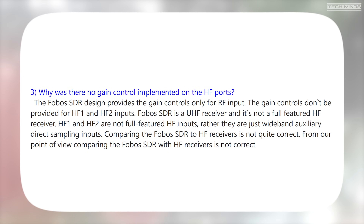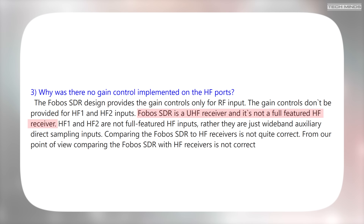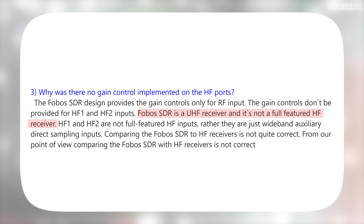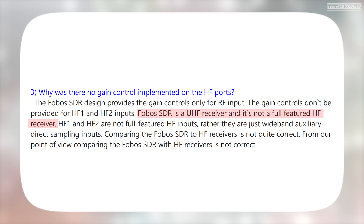Question three was why was there no gain control implemented on the HF ports, since having gain controls on the hardware could improve any of those mirror signals I was seeing. Their response was that the Phobos SDR design provides gain controls only for the RF input - they don't apply to the HF1 and HF2 inputs. They stated the Phobos SDR is a UHF receiver and not a full-featured HF receiver; HF1 and HF2 are wideband auxiliary direct sampling inputs. Comparing the Phobos SDR to HF receivers is, from their point of view, not correct.